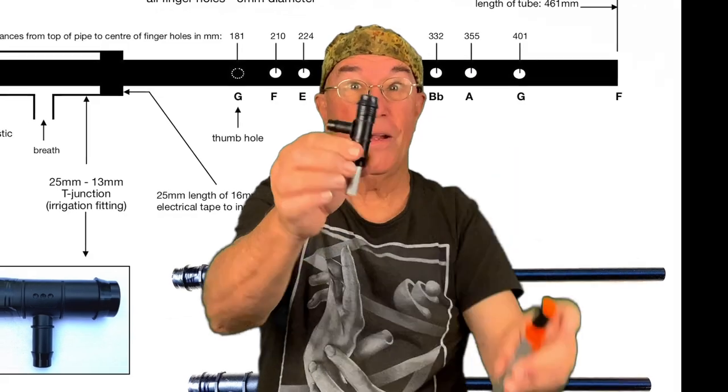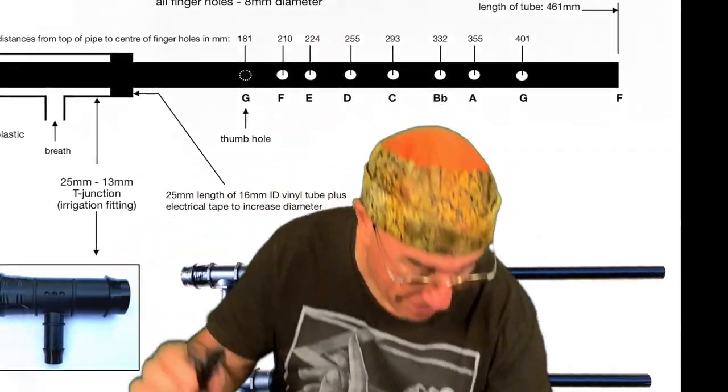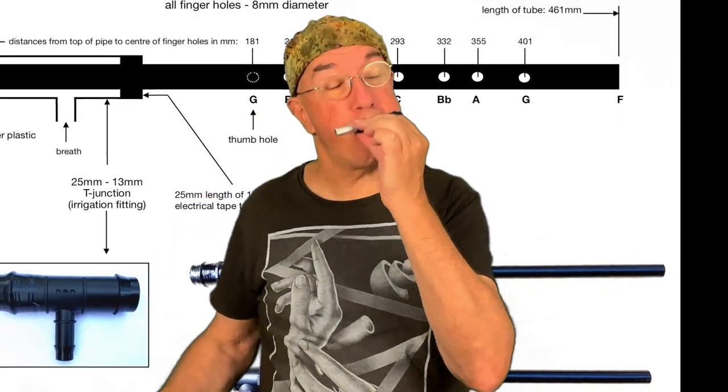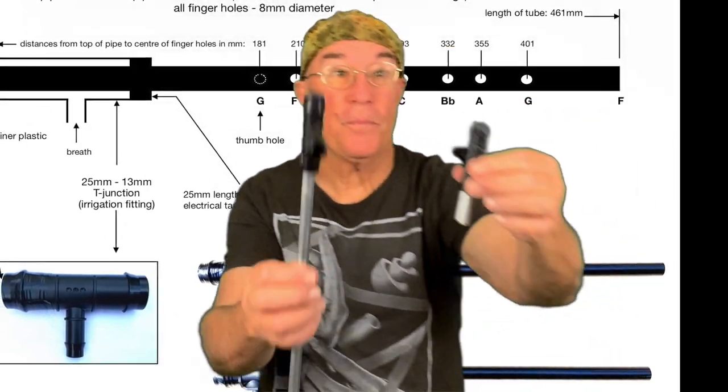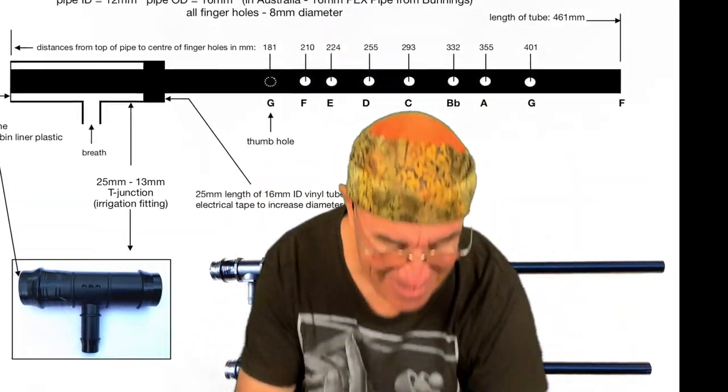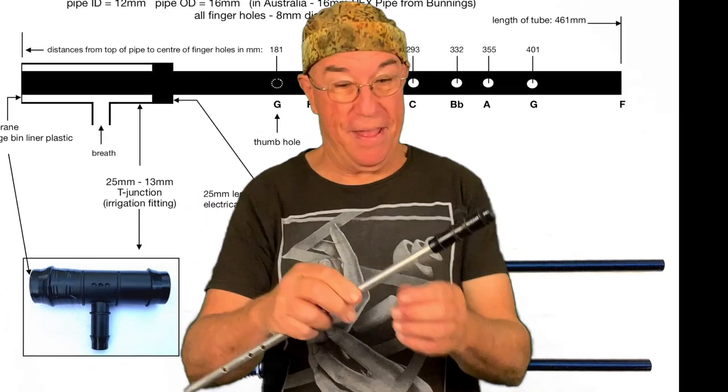Okay, let's improve it now. So let's change from balloon to garbage bag membrane, and that's stretched over a T junction, irrigation pipe T junction.